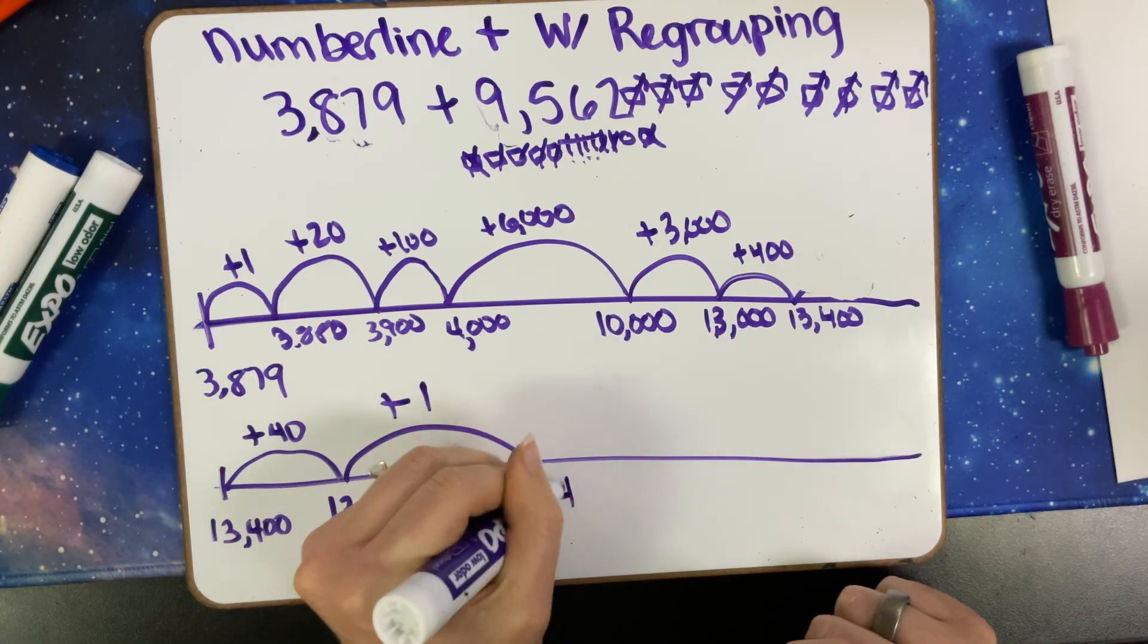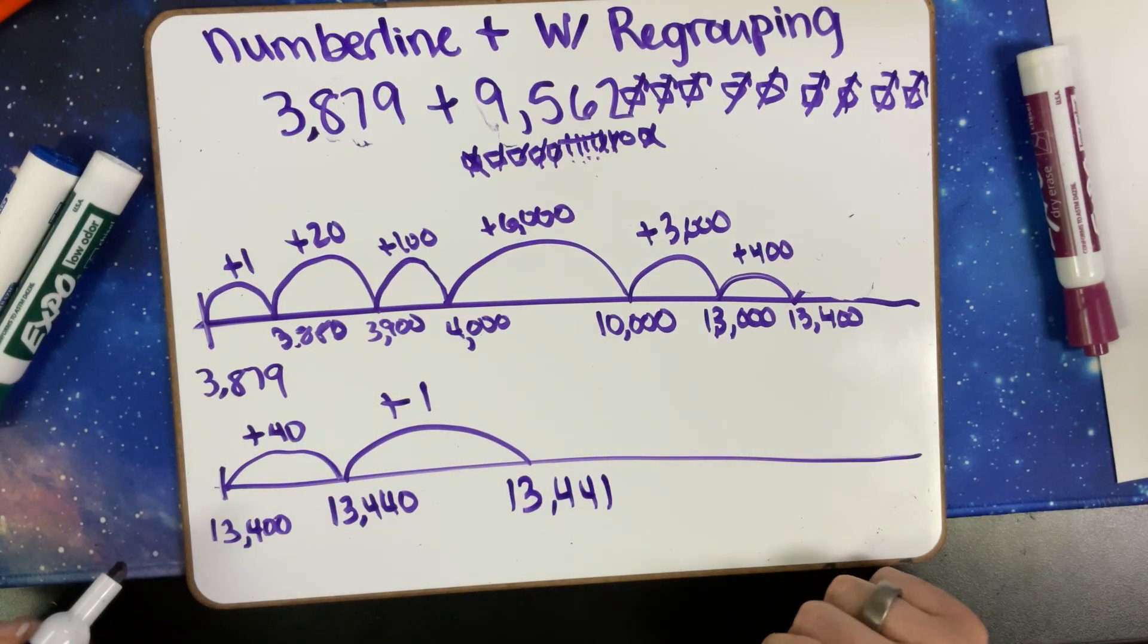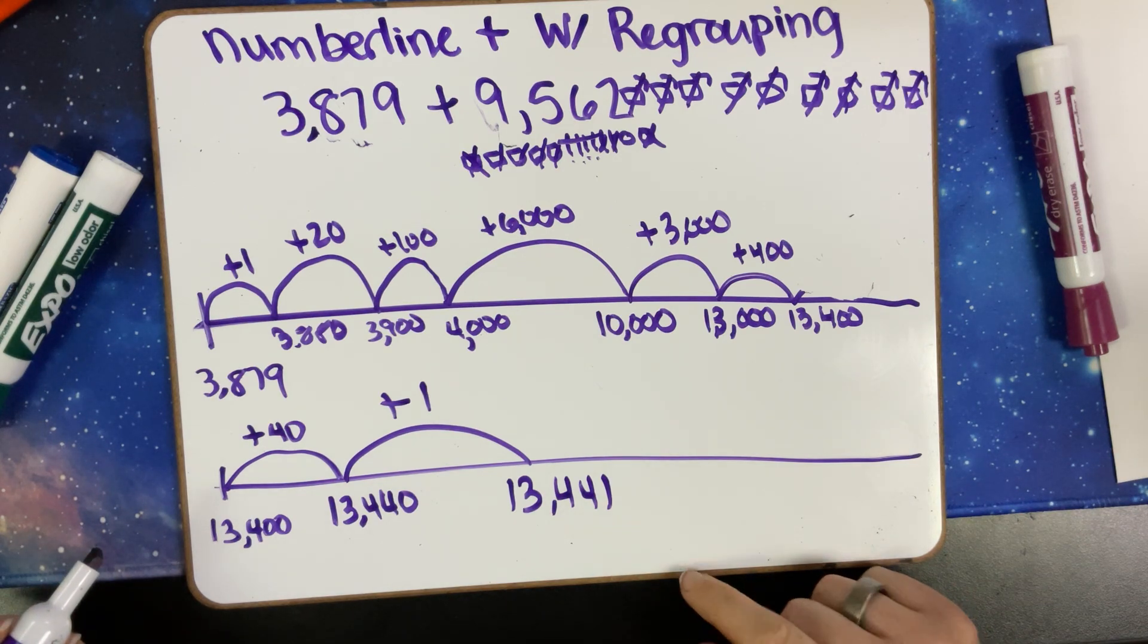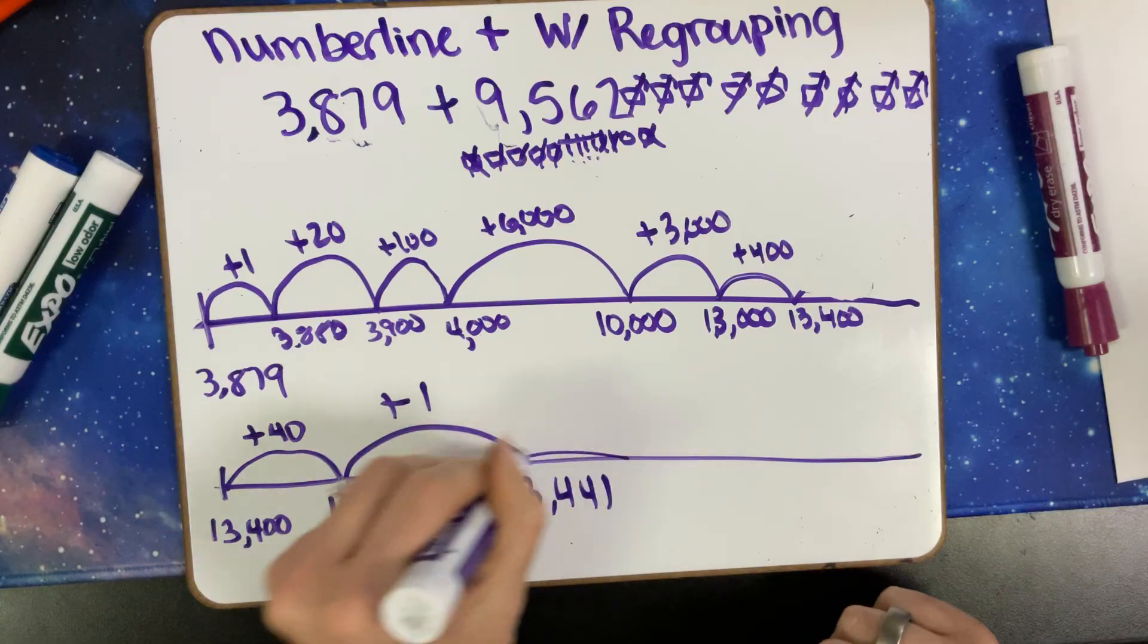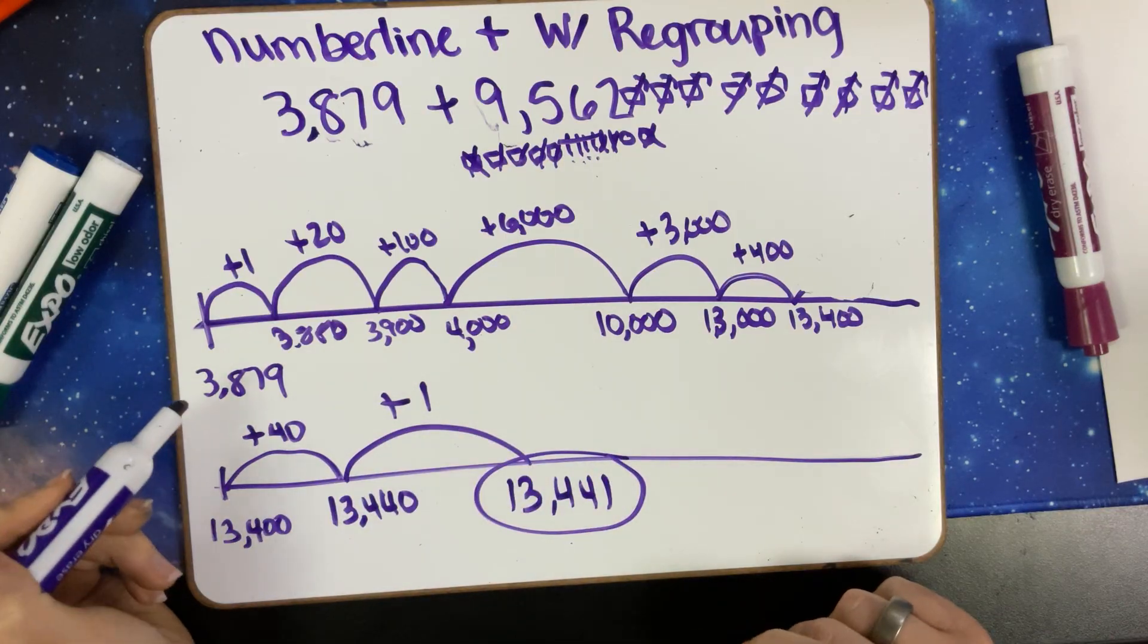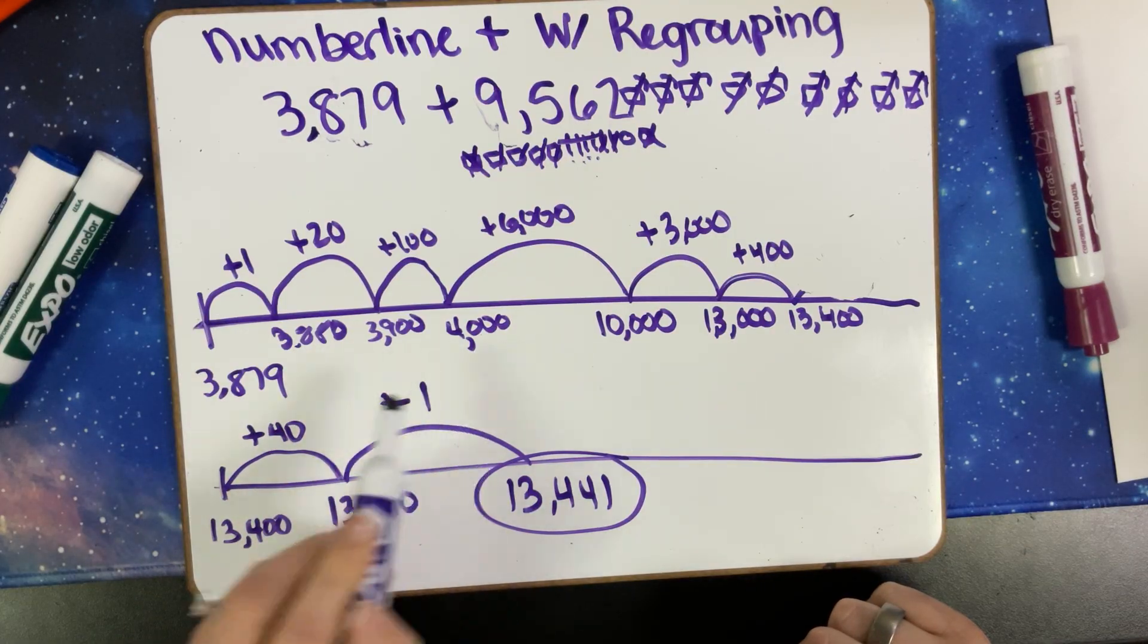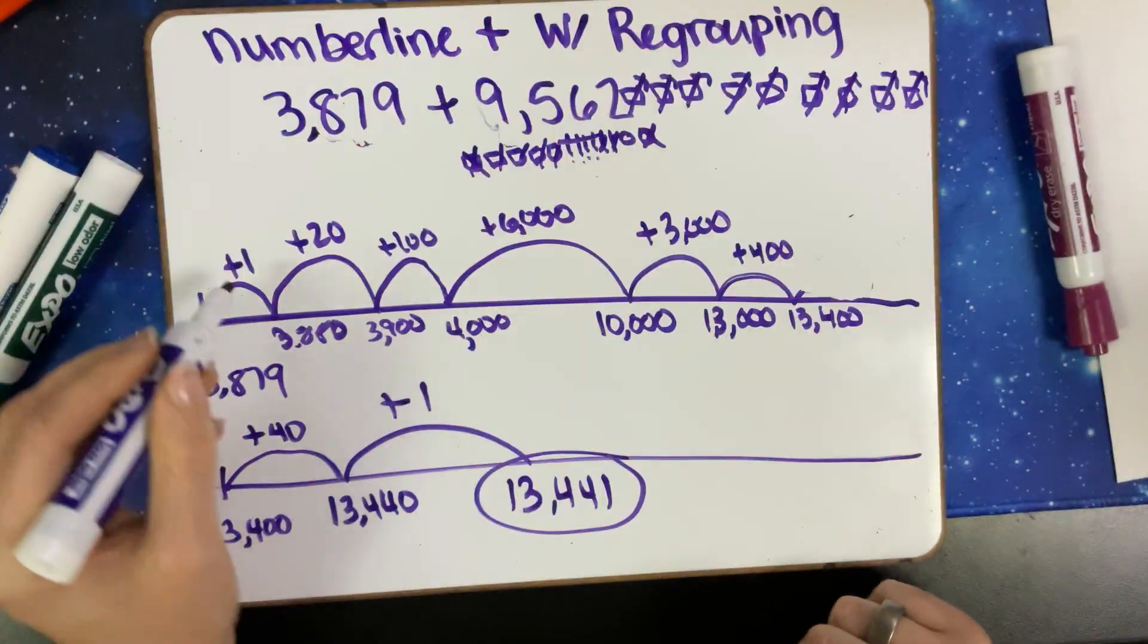And that would be our answer. The reason why this is the best for regrouping is my first step: I took this number and I tried to get to zeros, so I did all of my regrouping right here.